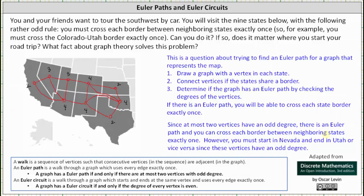However, for an Euler path, you would have to start at a vertex with an odd degree and end at a vertex with an odd degree, which means you must start in Nevada and end in Utah, or vice versa, since these are the vertices with odd degree.